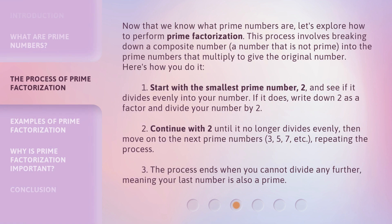Now that we know what prime numbers are, let's explore how to perform prime factorization. This process involves breaking down a composite number — a number that is not prime — into the prime numbers that multiply to give the original number.